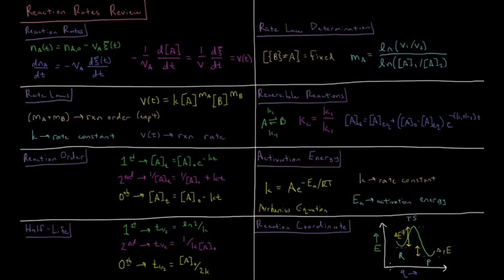The reaction coordinate is a conceptual tool that helps us visualize how the reaction moves from reactants to products. As the reaction progresses, you go from the reactant, climbing the activation barrier up to a transition state — the maximum energy along this coordinate — and then down to the product, with some change in energy equal to the difference between products and reactants. The rate is primarily determined by the activation energy ΔE‡, which is the primary factor governing the rate constant and the overall reaction rate.